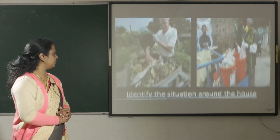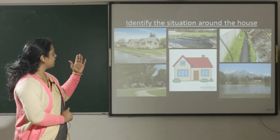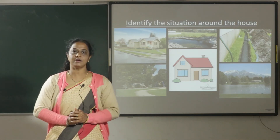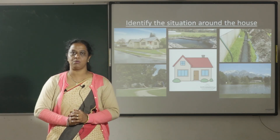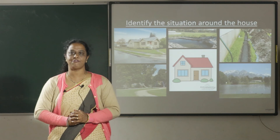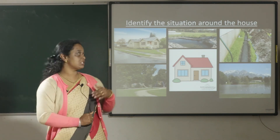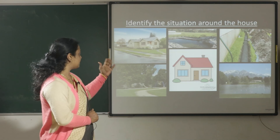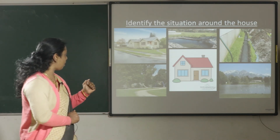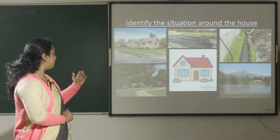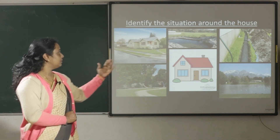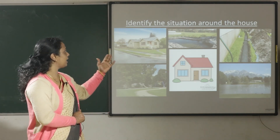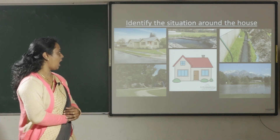Now let's identify the surroundings around the house. You can imagine what is there in front of your house. Towards your back side you can see a pond, towards your right side you can see another house. You can also see trees, a park, the drainage, and a river. These are the surroundings around the house.